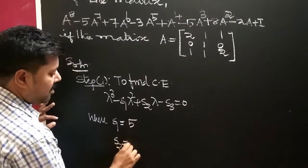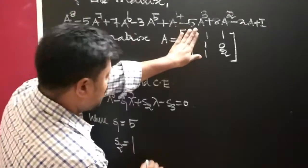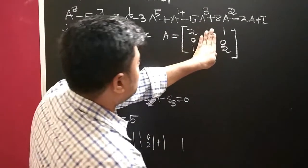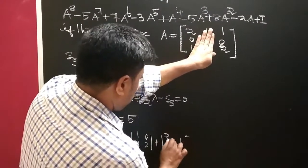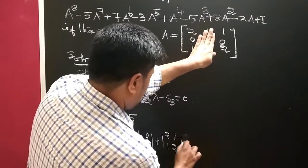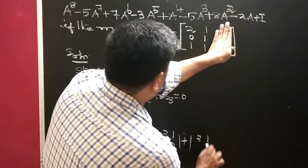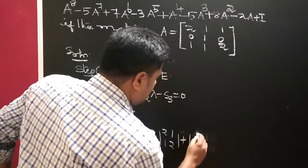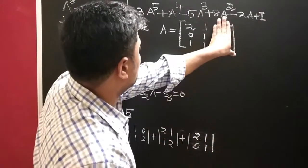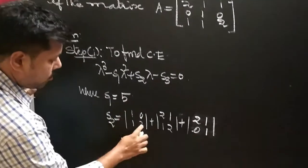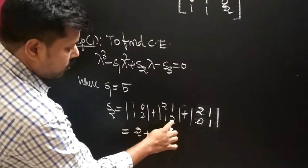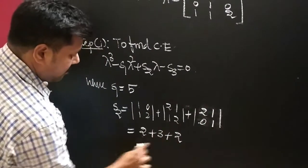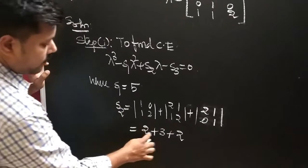S2 is the sum of the minors of the main diagonal elements. The minor of 2 is the 2x2 submatrix with elements 1, 0, 1, 2. The minor of the second diagonal element gives elements 2, 1, 1, 2. The minor of the third gives 2, 1, 0, 2. Computing: 1 into 2 is 2, plus 2 into 2 is 4, 4 minus 1 is 3, 1 into 2 is 2, so 5 plus 2 is 7. Therefore S2 equals 7.